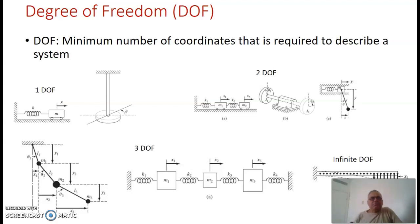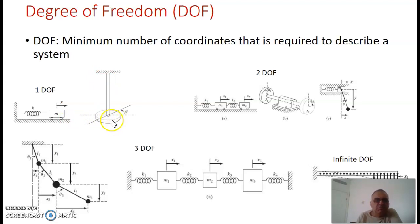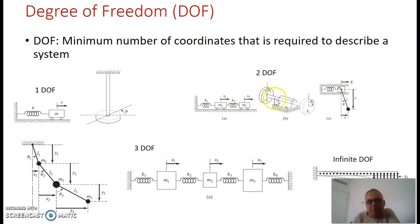A fundamental concept is the degree of freedom — the number of coordinates required to describe a system. For example, a single mass system has one degree of freedom because the x coordinate describes the motion. A torsional rod with an inertia connected to it uses theta to describe the motion — also one degree of freedom. If you have two masses, you need x₁ and x₂, giving two degrees of freedom. Similarly, two inertias on a shaft require two rotational degrees of freedom. A pendulum with a mass requires two degrees of freedom: x and theta.